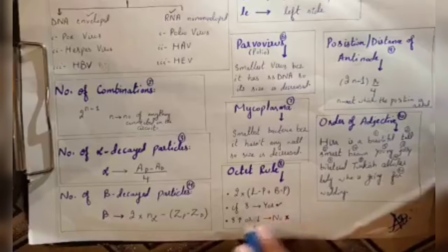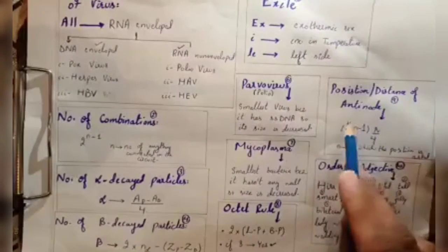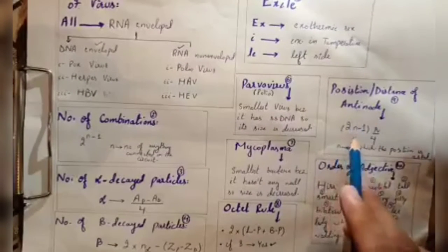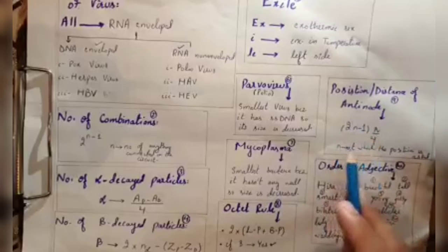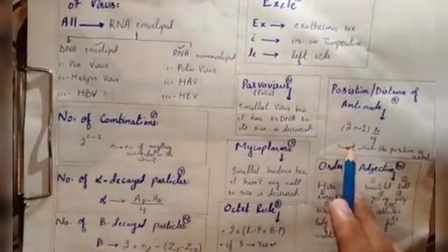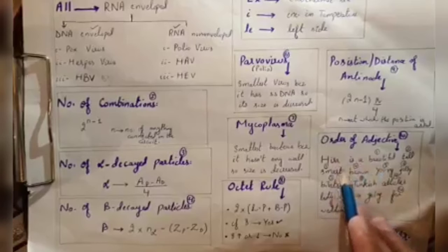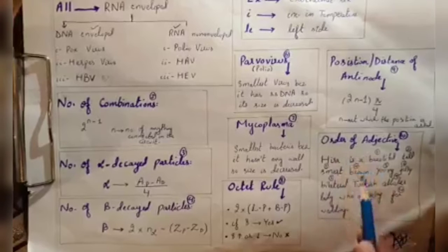Antinodes distance: you can ask the relation. It is N minus 1 multiplied by lambda over 4. This is also a rare formula. Order of objective shortcut: you can easily solve this.